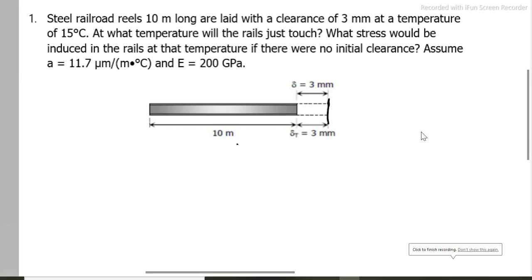Steel railroad rails 10 meters long are laid with a clearance of 3 mm at a temperature of 15 degrees Celsius. At what temperature will the rails just touch? What stress would be induced in the rails at that temperature if there were no initial clearance? Assume linear coefficient of 11.7 micrometers per meter times degree Celsius and modulus of elasticity of 200 gigapascals.